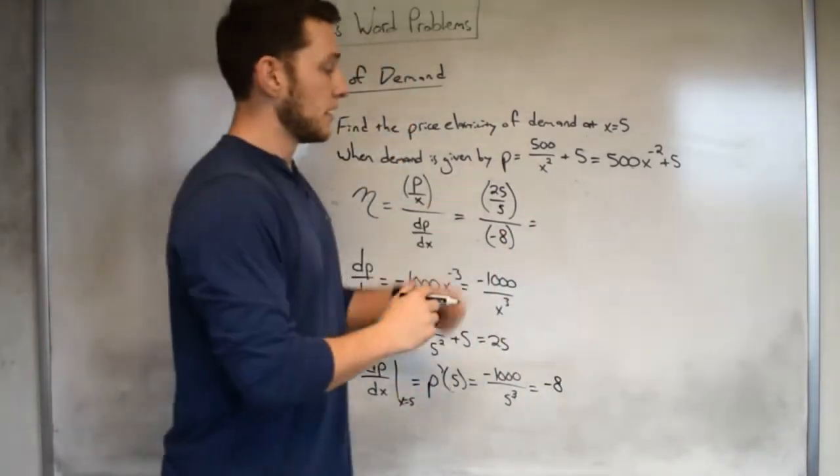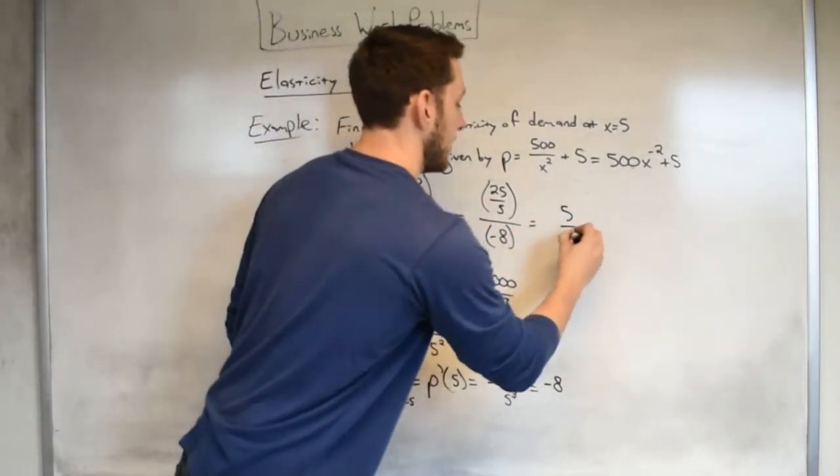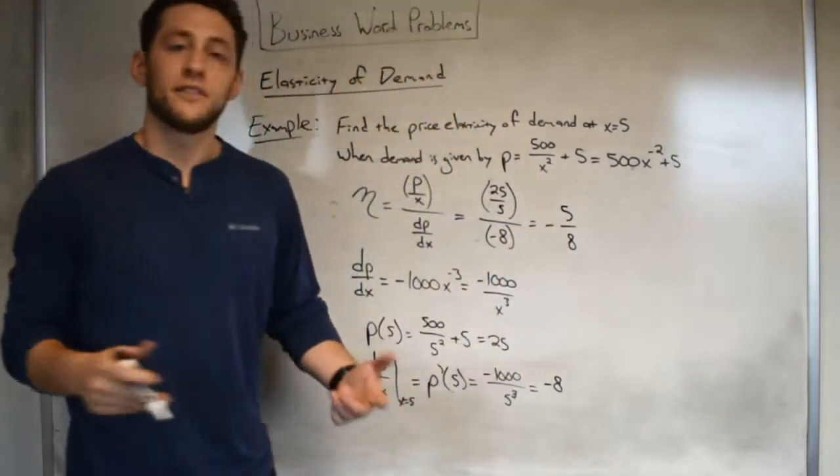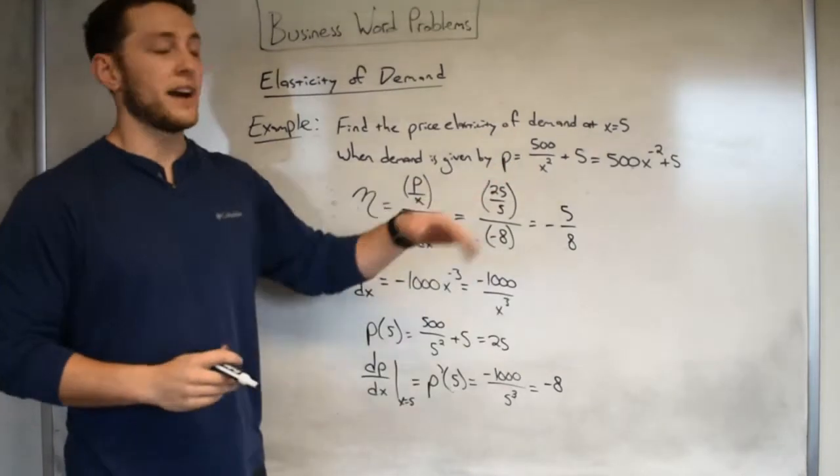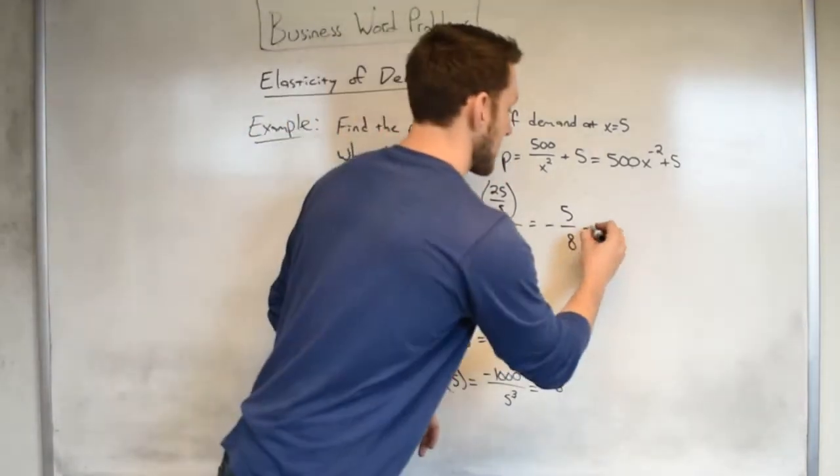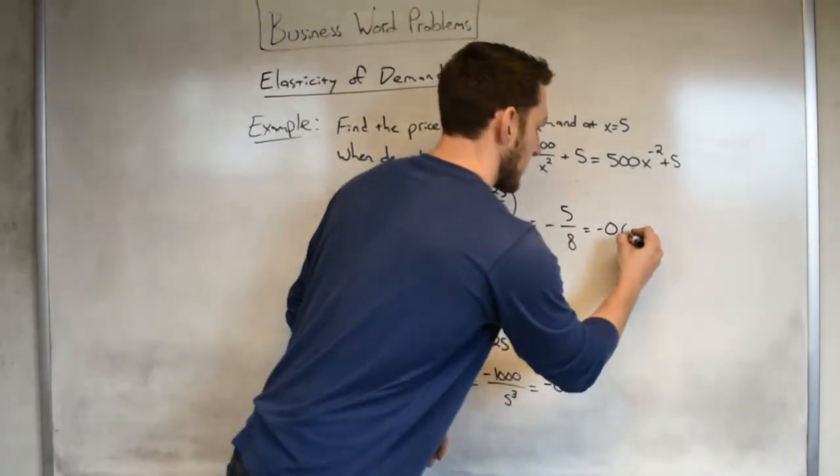Now when I simplify this thing out, up top I'll just be left with a 5. On bottom I'll have a negative 8. So we get negative 5 eighths, or if you want in decimals, negative 0.625.